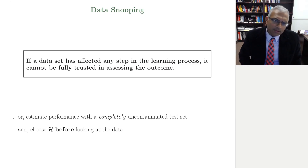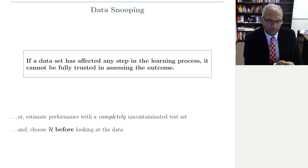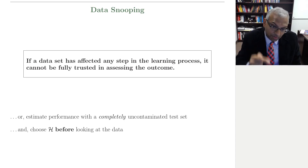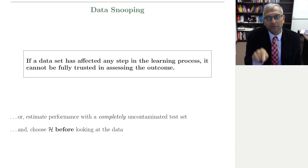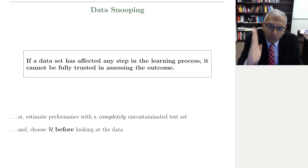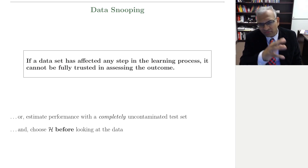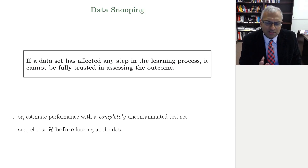There is one choice in the learning process that the data has to affect, which is the choice of your final hypothesis from your hypothesis set. We can account for that by making sure that you pick the hypothesis set before you look at the data. That was the reason for that very important principle: you always, always, always must choose your hypothesis set before you look at the data. It's a relatively simple principle, but it's very easy to violate.